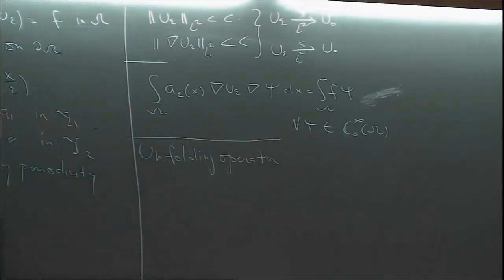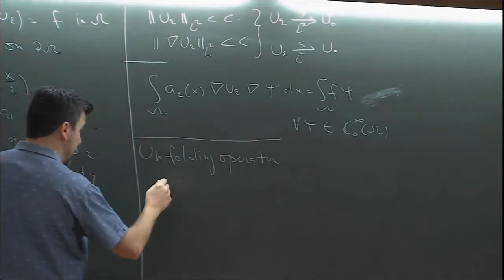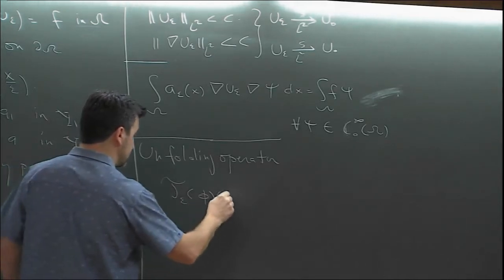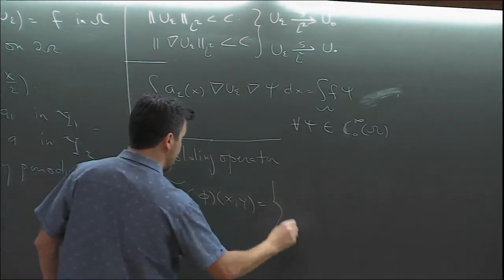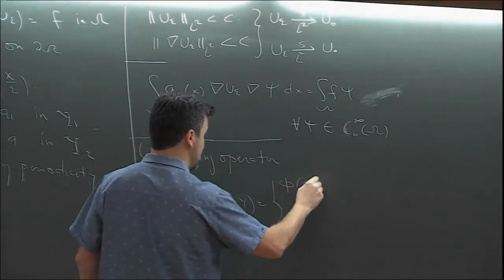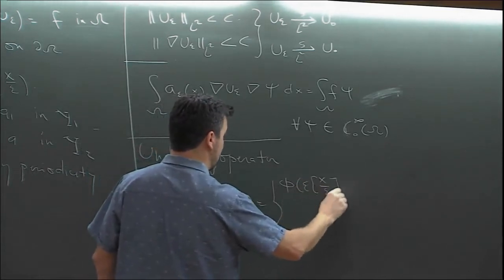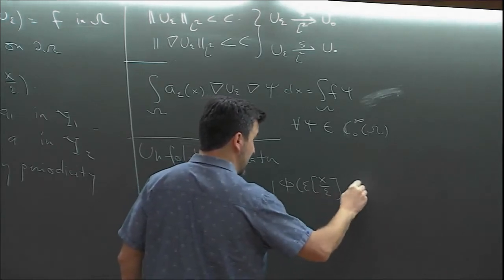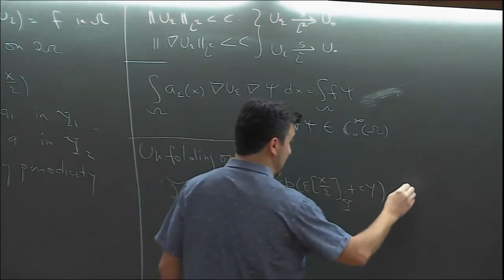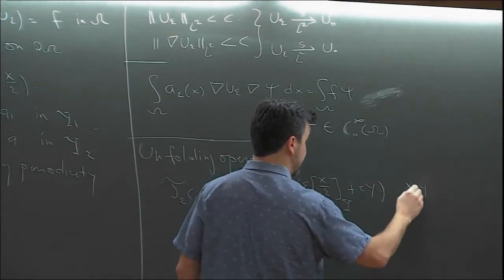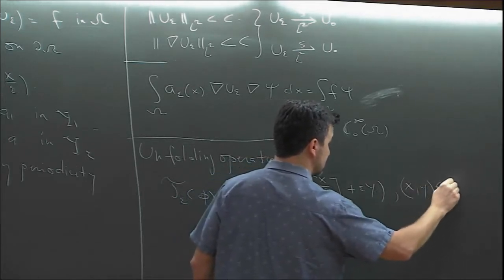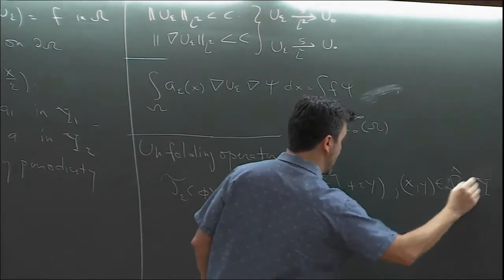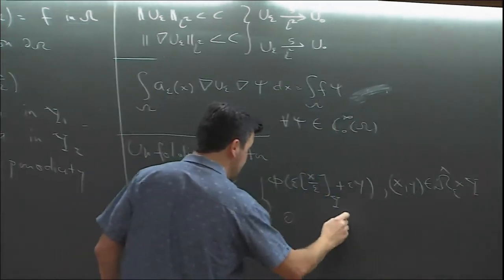The unfolding operator was defined using the integer part of x/ε on the period cell, in the interior set, and zero otherwise. I'll go fast here because we covered this already.